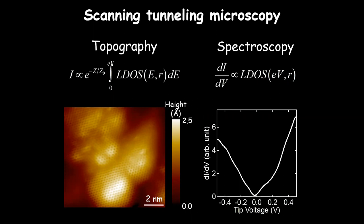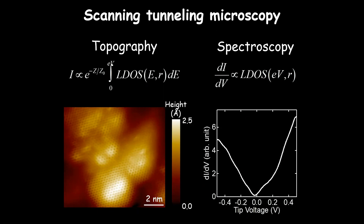The second mode: instead of scanning, we sit at one fixed location, turn off the feedback circuit so we no longer keep current constant but keep tip position constant, then change the voltage between tip and sample. By measuring dI/dV — the change in current with voltage — we get a derivative that gives us the local density of states. We can determine how many states are available for tunneling as a function of energy. For graphene, there is very low density of states near zero that linearly increases going away on either side — this comes from the Dirac cone band structure.